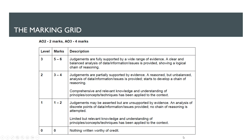So the marking grid — I'm not going to go through this in any detail, but just to identify a few points. Nothing worthy of credit means no marks. If we're stuck at level one, it's because our judgments have been asserted — we've said yes or no but given no evidence as to why, and we've provided no chain of reasoning at any point, so it's very fragmented. To get up to level two, judgments need to be partially supported by evidence, with some evaluation, but it may be a little unbalanced — perhaps a whole load of pros but not enough cons. To get right to the top, it needs to be balanced, with a clear and logical chain of reasoning throughout, and a judgment that's fully supported by a range of evidence.